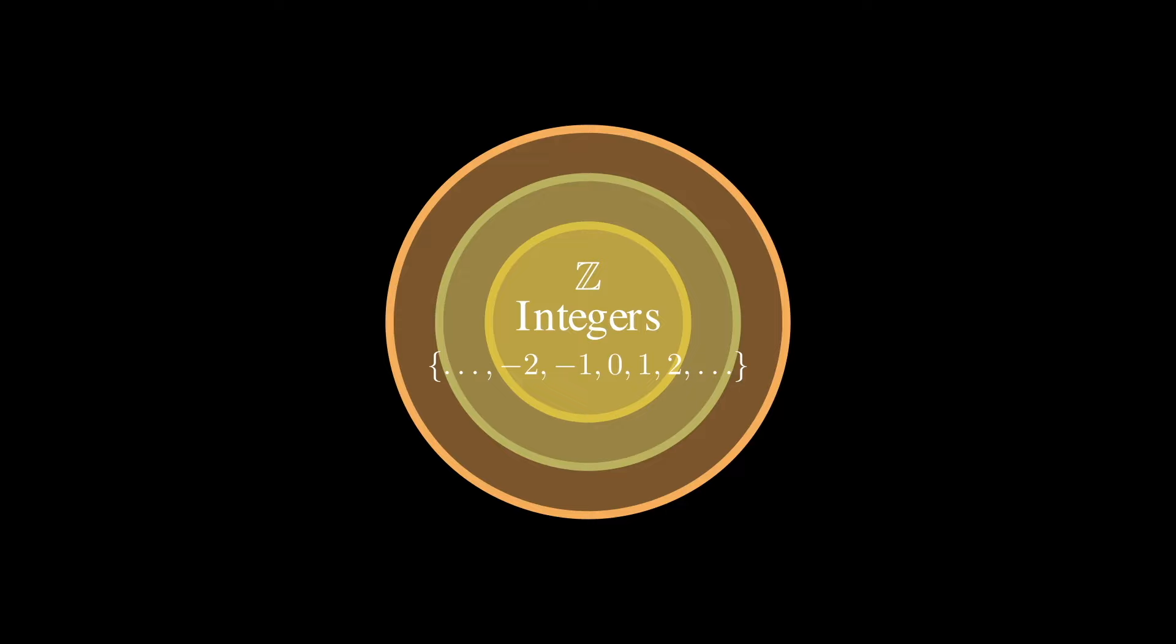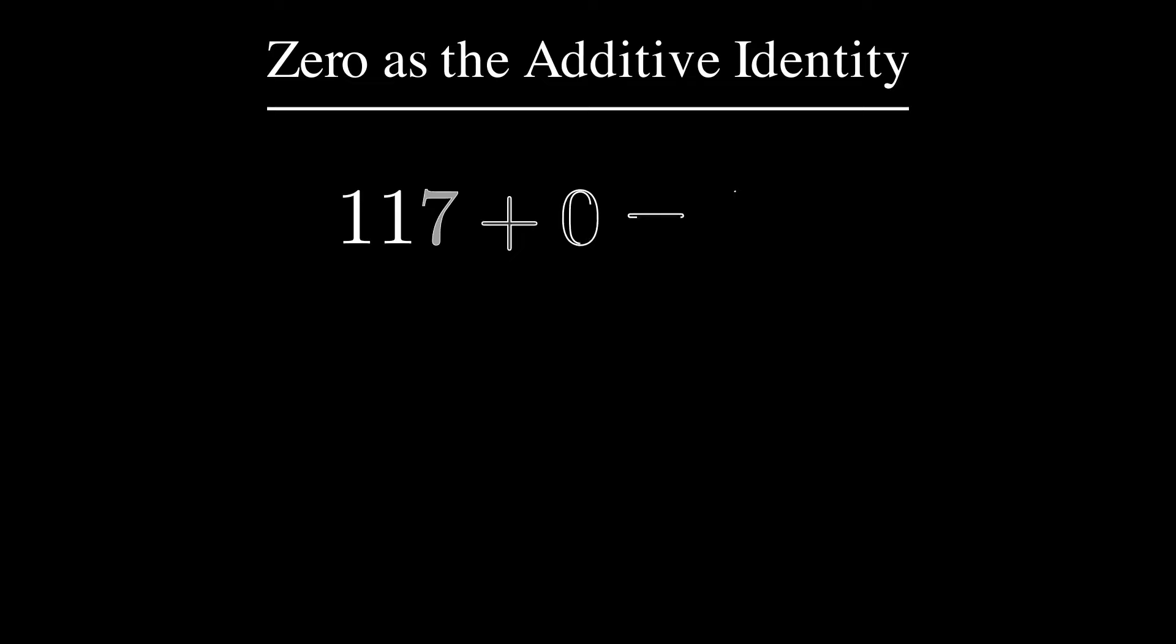The number 0 is fascinating in its own right. It serves as a placeholder in our decimal system, but it's much more than a symbol of nothing. In math, 0 is the additive identity. It's the number that, when added to any other number, leaves that number unchanged.